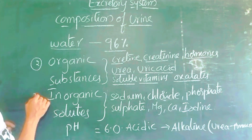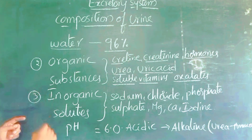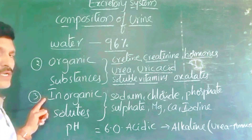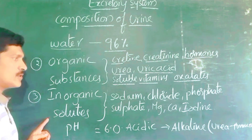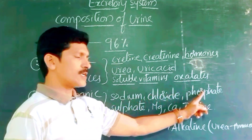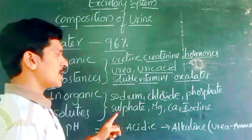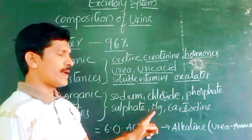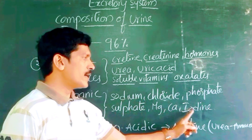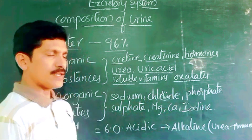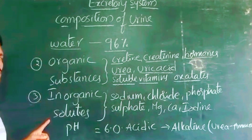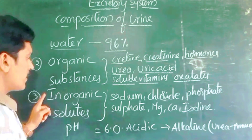The third component is inorganic solutes. What are the inorganic solutes? Sodium, chloride, phosphates, sulphate, magnesium, calcium, and iodine are the inorganic solutes present in the urine.